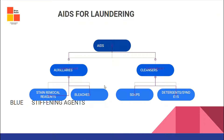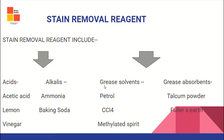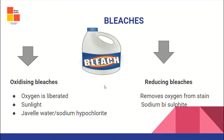Besides cleansers, auxiliary aids include stain removal reagents, bleaches to bring shine and whiteness, bluing agents, and stiffening agents. Stain removal reagents may be acidic — like acetic acid, commonly found at home as lemon or vinegar — or alkaline, like ammonia and baking soda. Grease solvents include petrol, carbon tetrachloride (CCl4), and methylated spirit. Grease absorbents commonly found at home are talcum powder and fuller's earth.